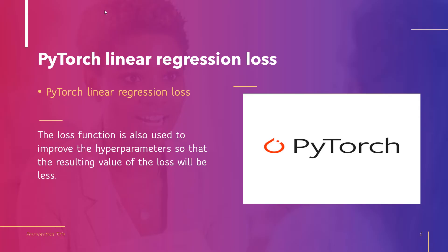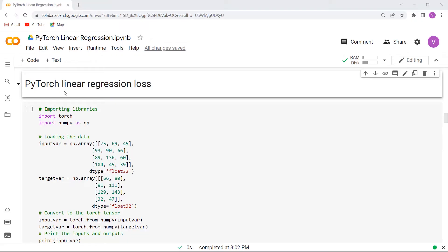Now let's discuss PyTorch linear regression loss. In linear regression, the loss function is used to calculate the performance of the model and how well it is performing. The loss function is also used to improve the hyperparameters so that the resulting value of the loss will be less. We will understand this concept with the help of an example.